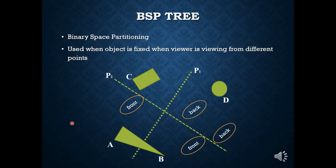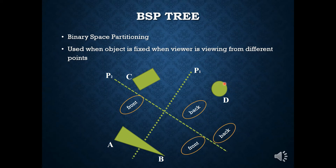The next algorithm is BSP, which stands for Binary Space Partitioning. The BSP tree algorithm is used when the object is fixed and the viewer is viewing from different points. For example, with objects A, B, C, and D in the scene, we have partition lines P1 and P2. From the P1 division line, the scene is split into a front part and a back part. Object A and C are on the front side of P1, while B and D are on the back side.